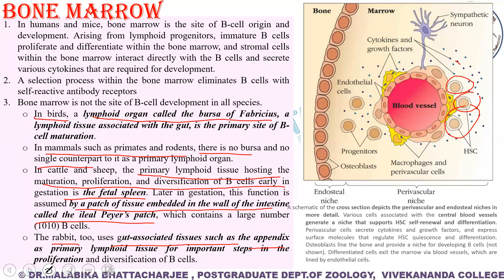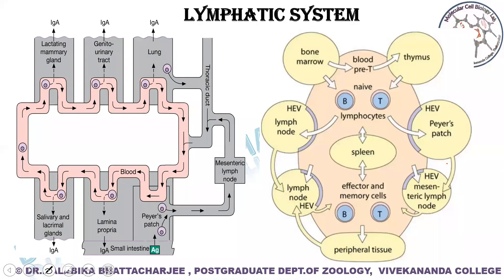Next, we move to the lymphatic system. Once mature lymphocytes have been generated in the primary lymphoid organs, they circulate in blood and the lymphatic system, forming a network that moves throughout the body. Lymphocytes can move via the lymphatics into tissue spaces, and from tissue spaces back into lymphatic circulation.